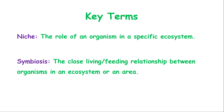Another term you need to know is niche. A niche is the role of an organism in a specific ecosystem. For example, a plant may be a producer, so the role of a plant in that ecosystem is to supply food for all other organisms. Other roles include carnivores and omnivores. Any function of that organism within that ecosystem is referred to as its niche — the role or function of an organism within that specific ecosystem.